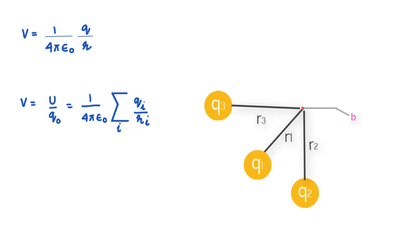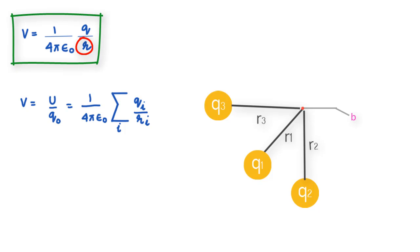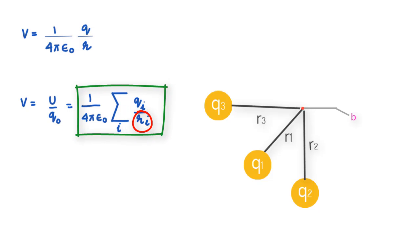One quick observation: the potential at infinity would be zero, because the moment you put R equal to infinity the expression becomes zero. The same would be true for the multi-charge equation if you put all R values as infinity.